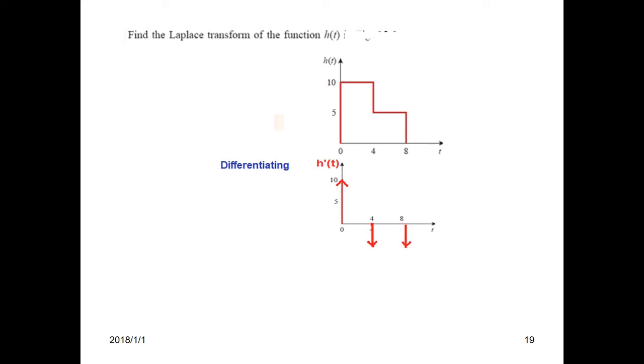The impulse of magnitude 5 going down. So this is the differential function, and now we'll follow the exact same technique. We write h'(t), and then we take Laplace of all. This Laplace will be sH(s). This will be 10 because Laplace of δ(t) is 1.